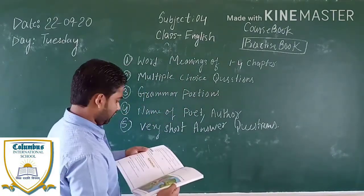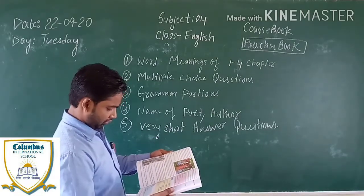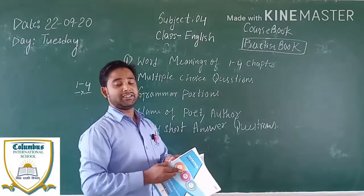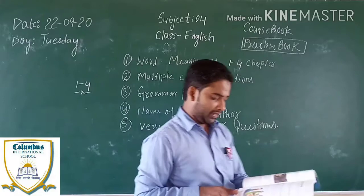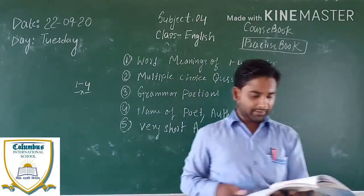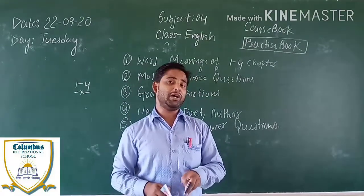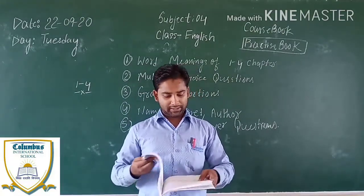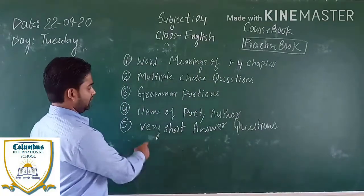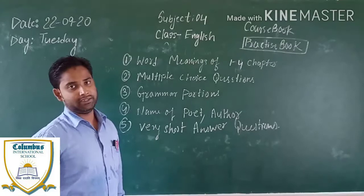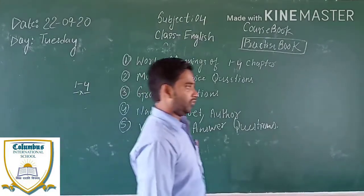You also have to study the name of the author and name of the poet. And the last thing is that you have to learn the very short answer questions. I think, children, you are now clear about what you have to learn and what you don't have to learn.